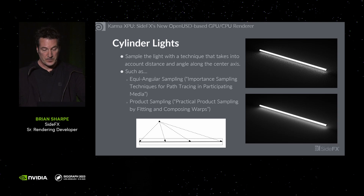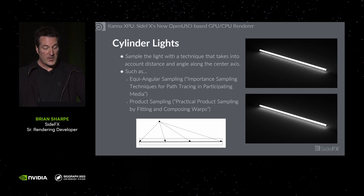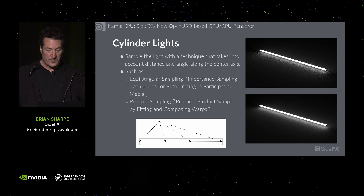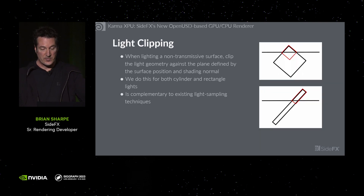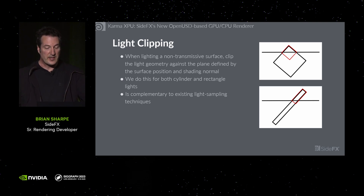Now for some lighting details. We have improved sampling on our cylinder lights, which now take into account both distance and angle along the central axis of the cylinder, as can be seen in the white diagram — the cylinder itself is the grey box, and we sample along the central axis, which is the line in black. The assumption is that cylinder lights are usually long and thin, and if we get a short one, sampling reduces to uniform sampling anyway. Anyone wanting to experiment can look into equi-angular sampling, as in this paper by the Arnold team, and also product sampling, as in this paper by David Hart and others at NVIDIA. We also clip the light geometry where possible, conservatively clipping against the plane defined by the surface position and the shading normal, for both cylinder lights and rectangle lights. Because the lights retain their original shape — a rectangle stays a rectangle, a cylinder stays a cylinder — we can continue to use existing techniques to sample the clipped shape.